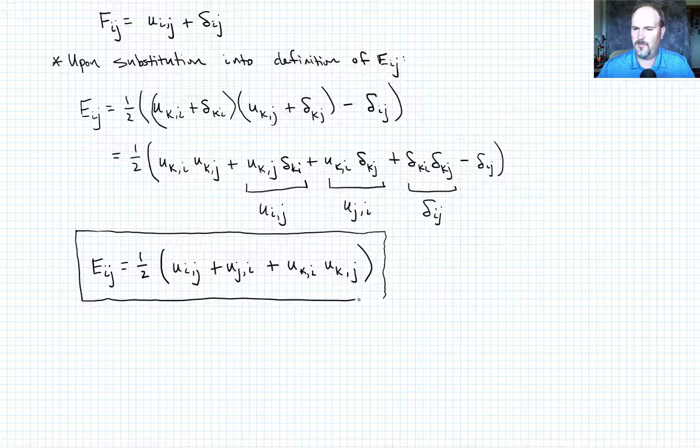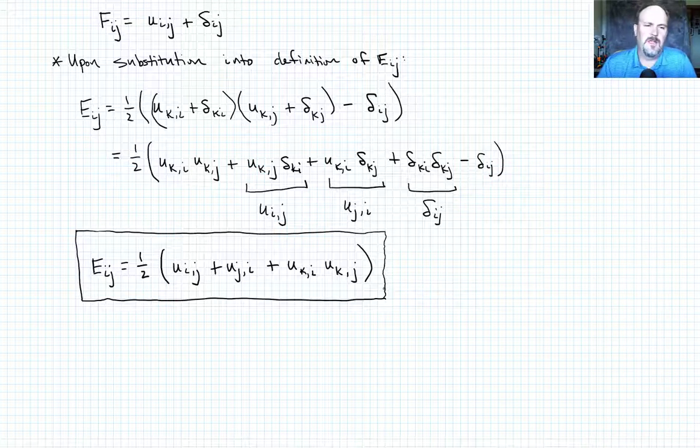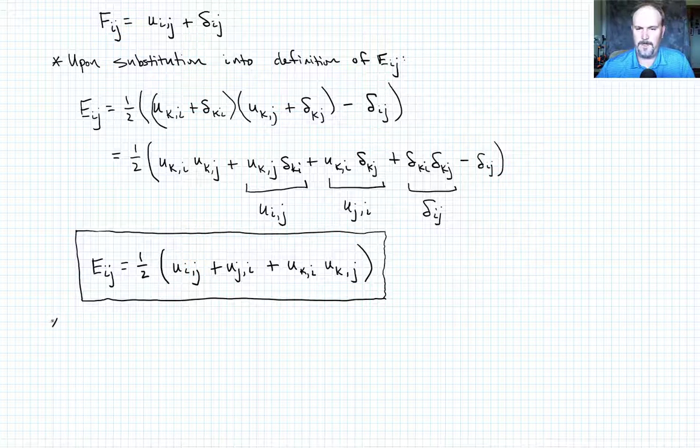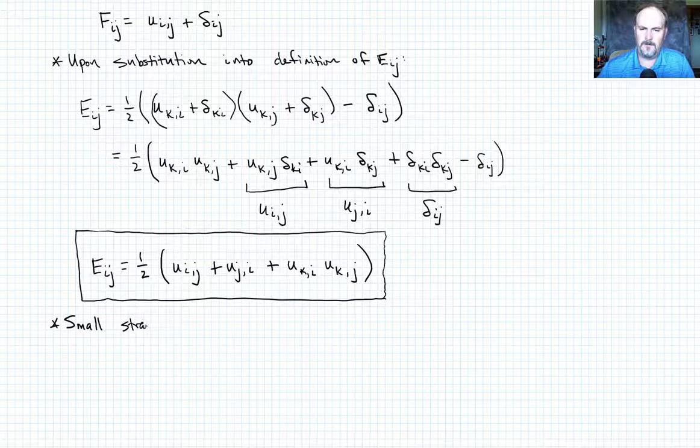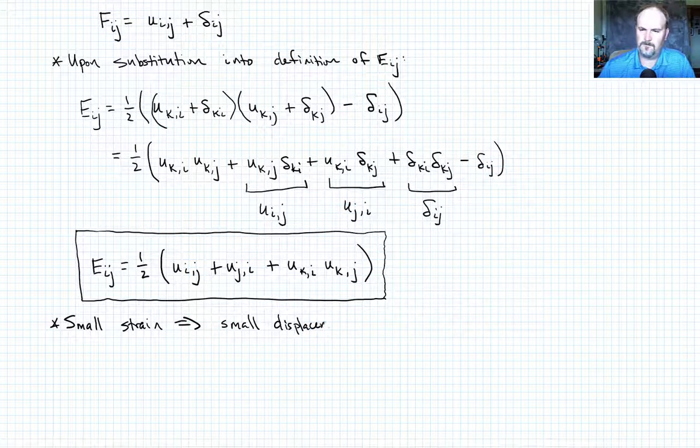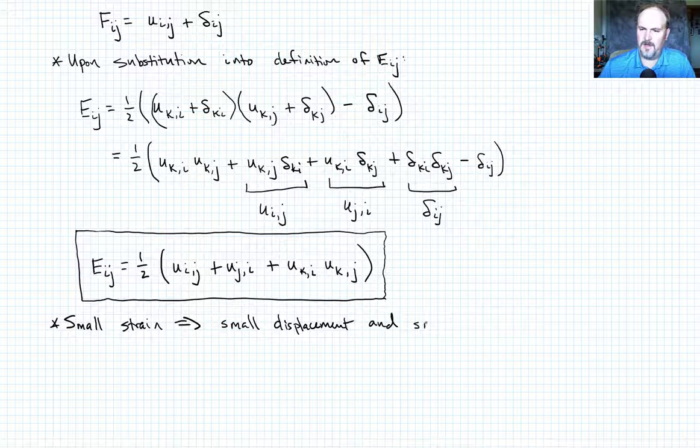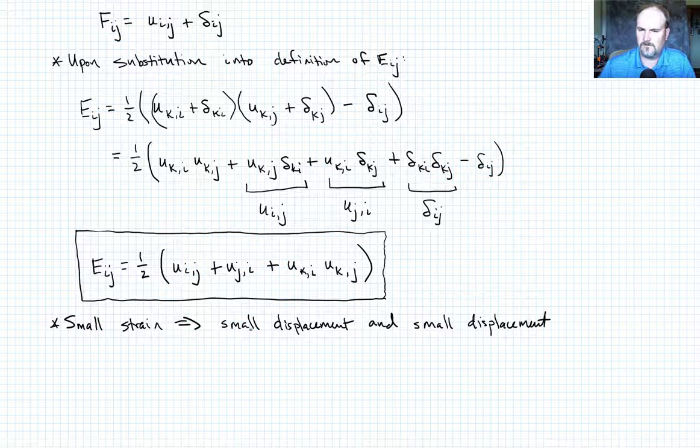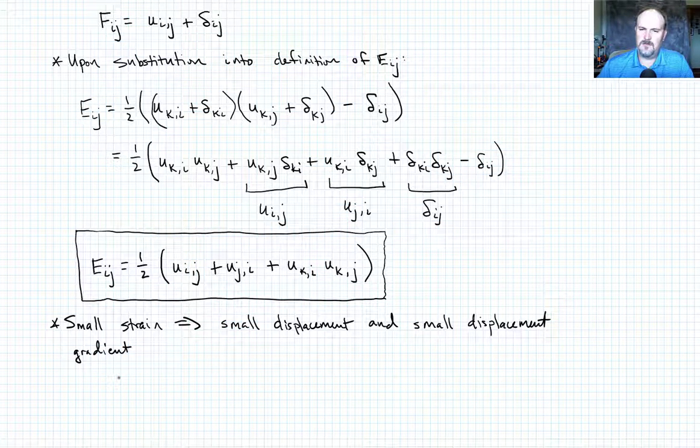Now we want to talk about what happens. If you remember from our last lecture, we talked about specializing to small strain to get the delta L over L term that you're familiar with. And so now let's ask the question, what about small strain here? What does that actually look like for the strain tensor? So in the case of small strain, what that actually means is that we have small displacement and small displacement gradient.